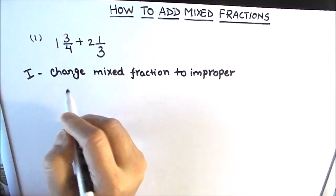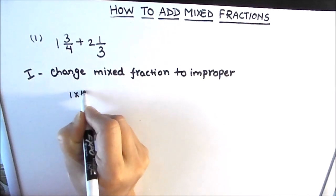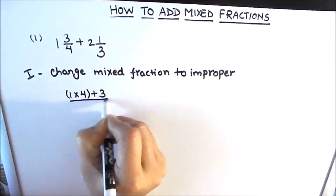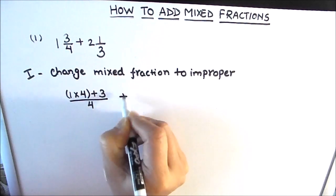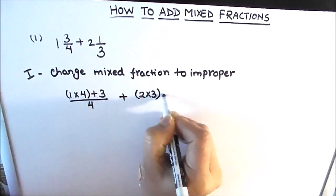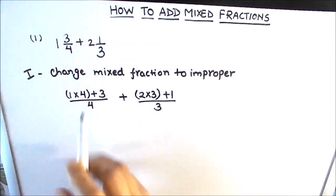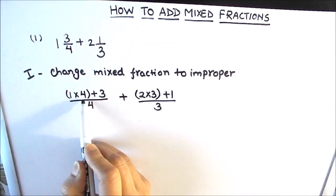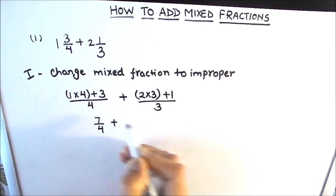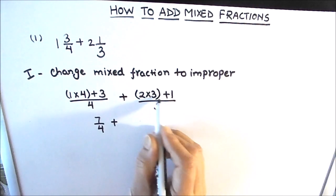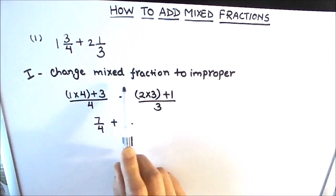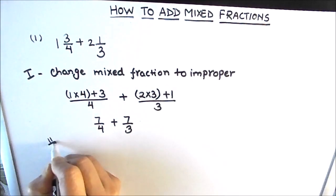So 1¾ will be (1 × 4 + 3) ÷ 4, and 2⅓ will be (2 × 3 + 1) ÷ 3. So this is going to be 1 × 4 = 4, 4 + 3 = 7, giving us 7/4. Plus 2 × 3 = 6, 6 + 1 = 7, giving us 7/3. So this completes our first step to change mixed fractions to improper fractions.